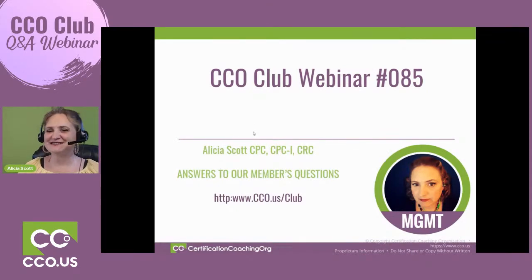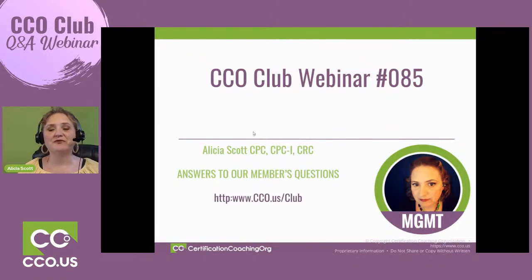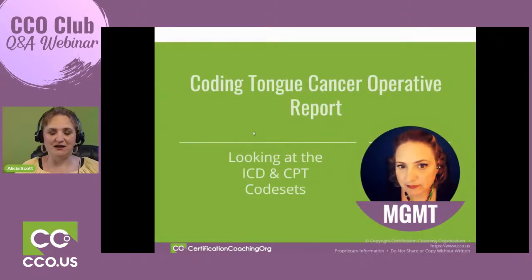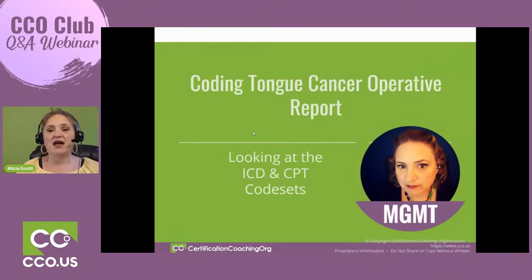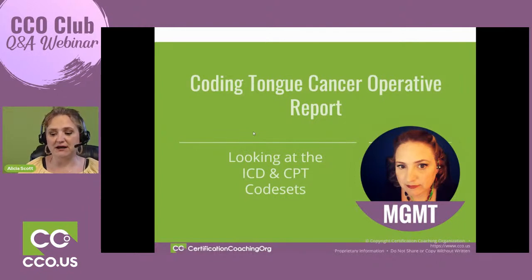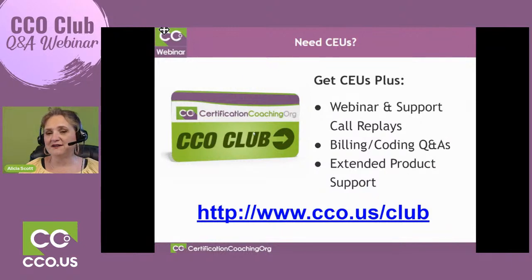Hello, we're ready for CCO Club Webinar number 85. Our club webinars are set up to pull questions that have come from our CCO Club. If you're interested in our CCO Club, it's easy to find: cco.us/club. We got a great question that came in this week — coding tongue cancer from an operative report — and we're going to look at the ICD and CPT code sets to determine if the right codes were picked.